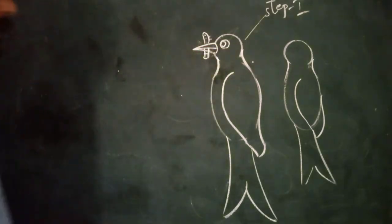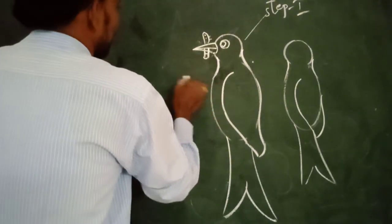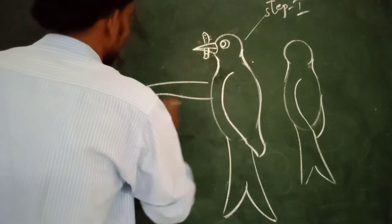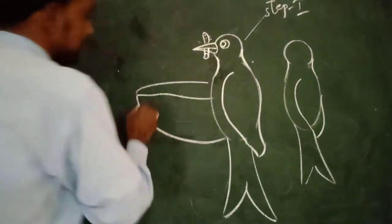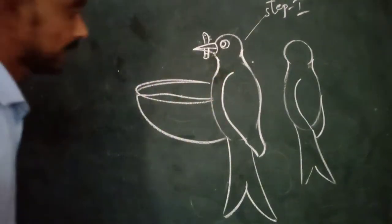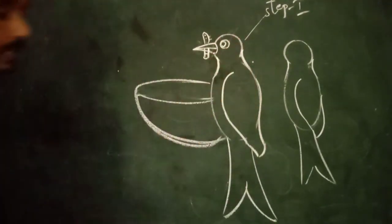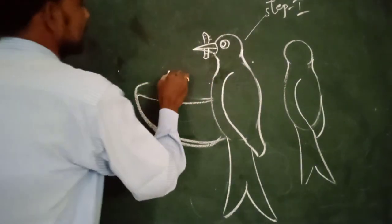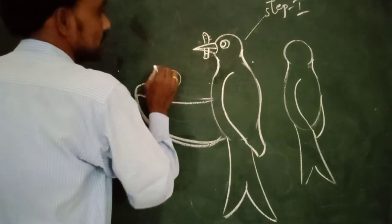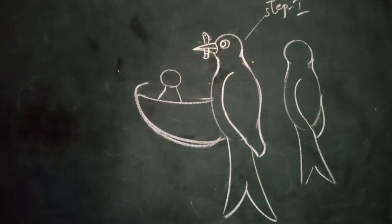Now I am going to add a nest. It is very easy to draw. I have taken the help of an oval shape. For this oval I added one semicircle. Now inside the semicircle I am going to draw small birds — two small circles.